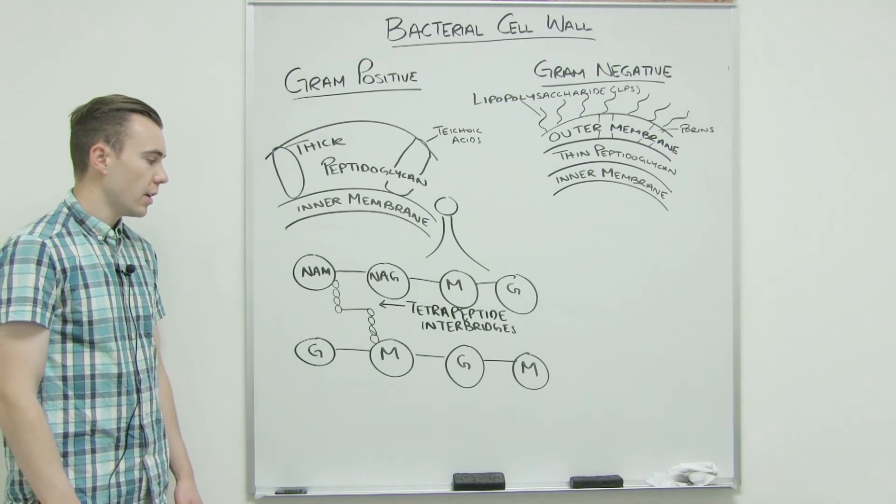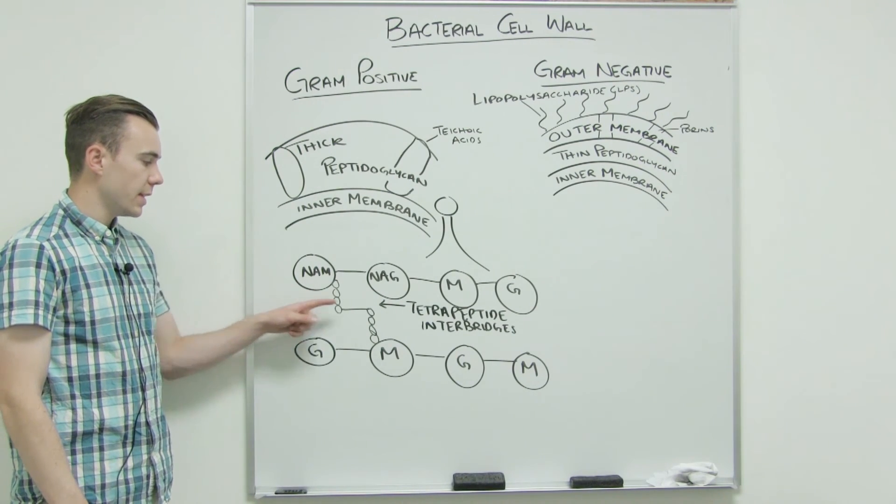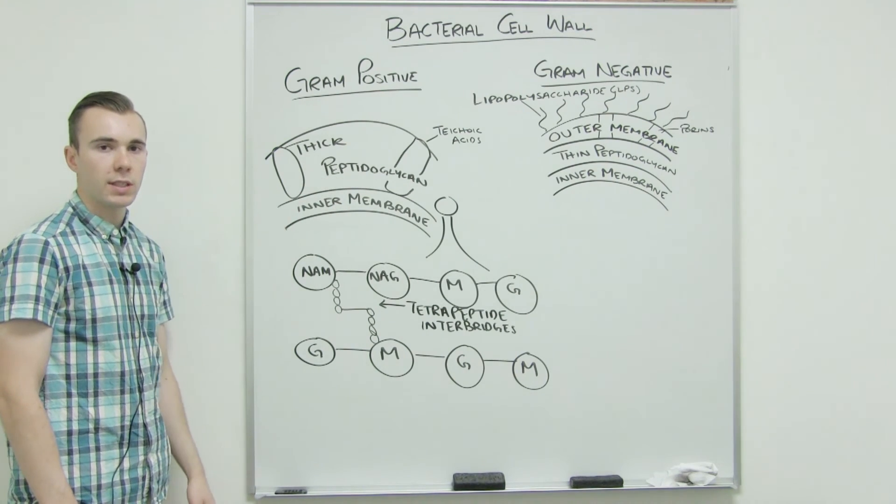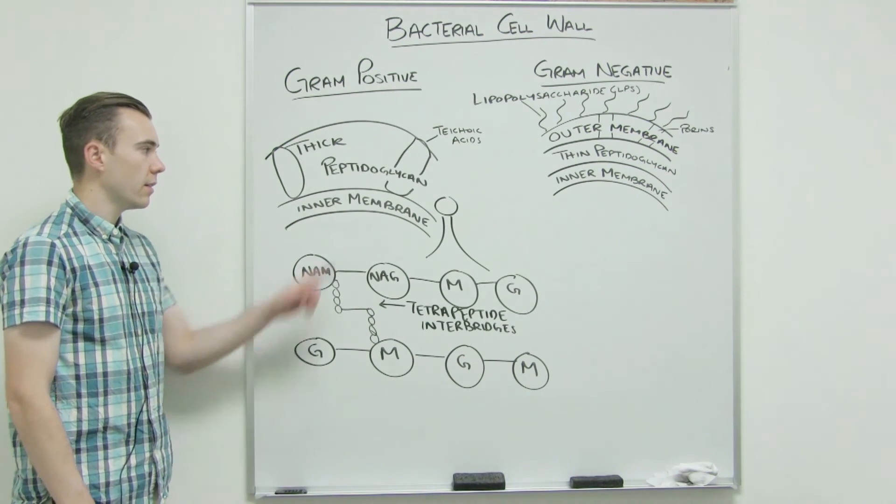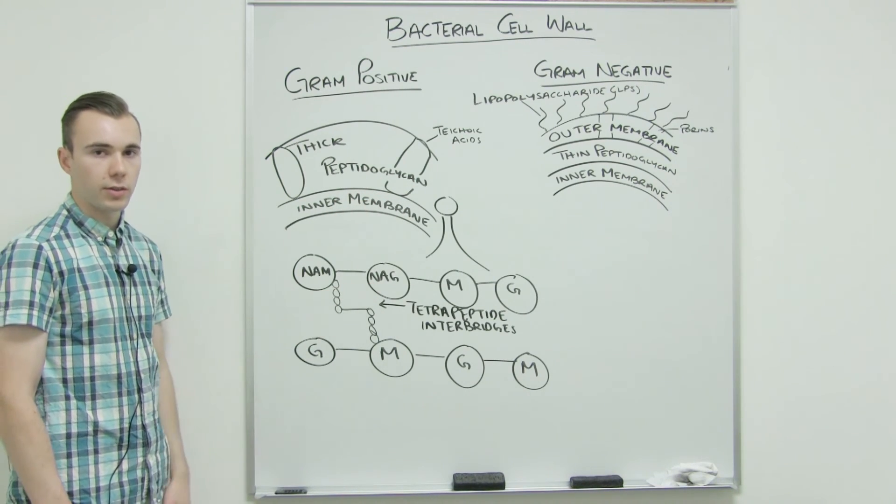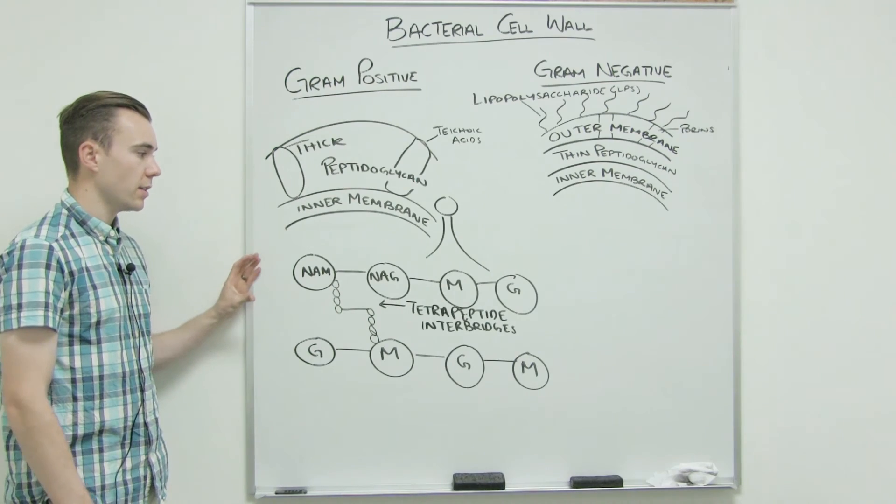So this is the protein aspect of peptidoglycan. The peptido refers to the tetrapeptide interbridges, while glycan refers to the NAM and NAG sugars. And so this is the concept of peptidoglycan.